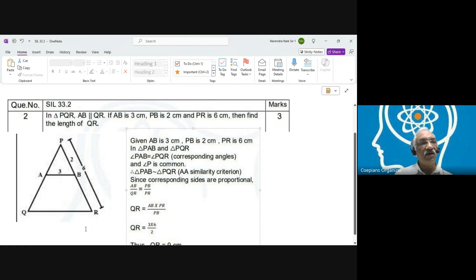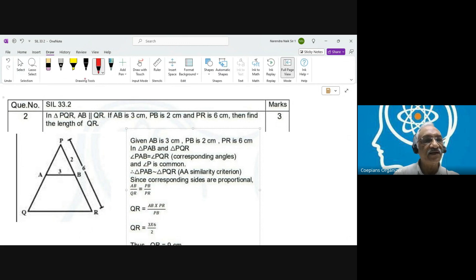Hello, good evening. We are going to look at this particular problem which says that in triangle PQR, AB is parallel to QR. AB length is given as 3 centimeters, PB is given as 2 centimeters, PR is given as 6 centimeters, and we have to find QR.